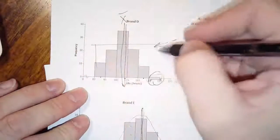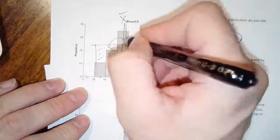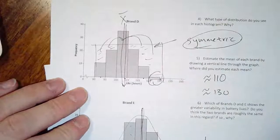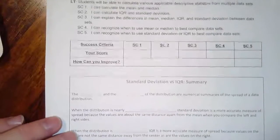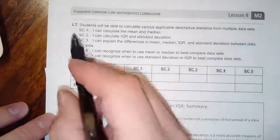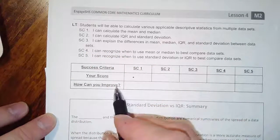There is a section for the learning targets and success criteria. Please score yourself on those, please discuss your own form of reference how you could improve. Let's fill out the blank at the bottom.